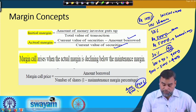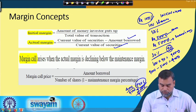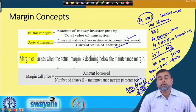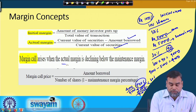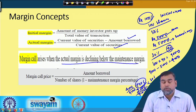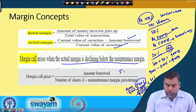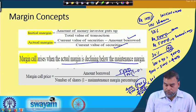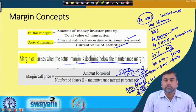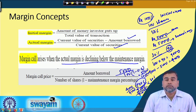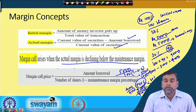If the price further drops to Rs. 70, total value = Rs. 7,000, equity = Rs. 2,000, actual margin = 2000/7000 ≈ 28.6%, which is below the 30% maintenance margin — so the broker will issue a margin call. The margin call arises when the actual margin declines below the maintenance margin. To find the exact price at which a margin call occurs, use the formula: Amount Borrowed / (Number of Shares × (1 − Maintenance Margin)), which works out to approximately Rs. 71.43 in this example.